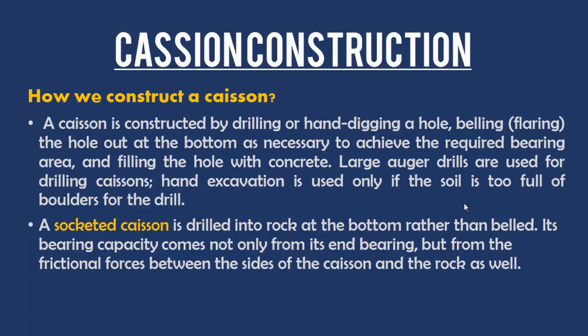Large auger drills are used for drilling caissons; hand excavation is used only if the soil is too full of boulders for the drill. A socketed caisson is drilled into rock at the bottom rather than belled; its bearing capacity comes not only from its end bearing but from frictional forces between the sides of the caisson and the rock as well. There are two types of caissons: normal caissons and socketed caissons.